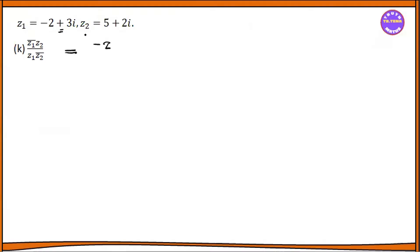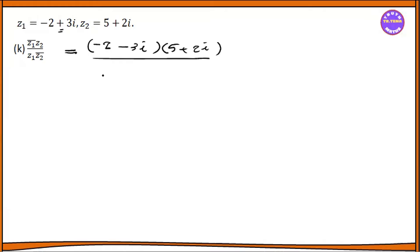So the 2 plus 3i. So 2 by 2, 5 plus 2i, 5. So minus 2 plus 3i. So 2 plus 5 plus 2i. Sorry, 5 minus 2i.